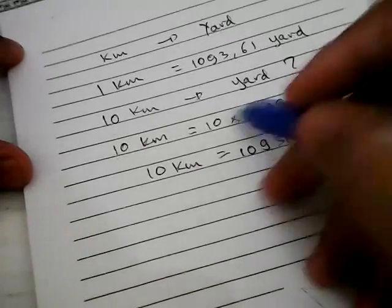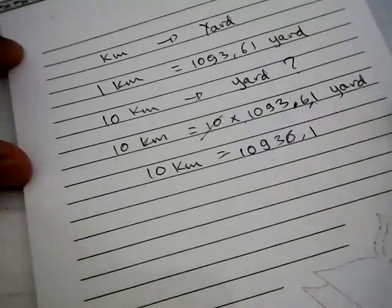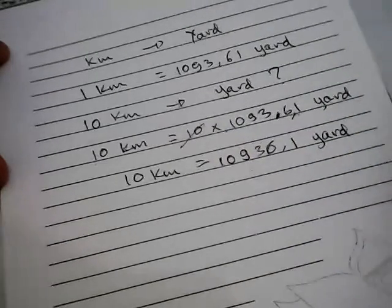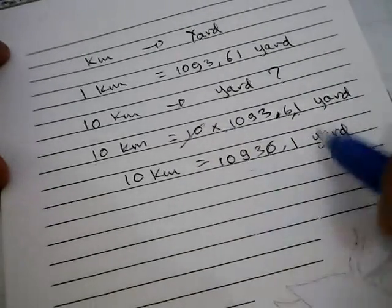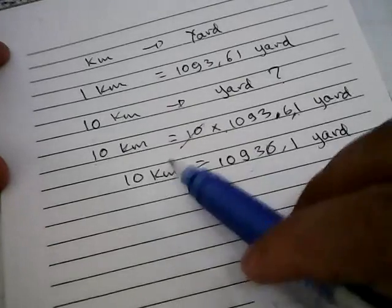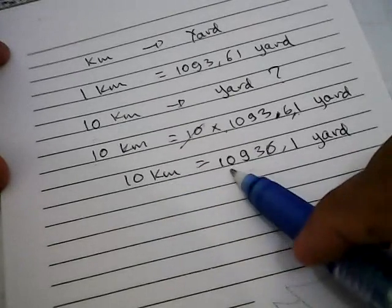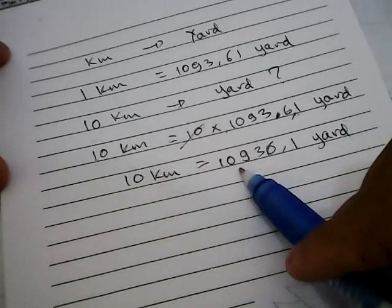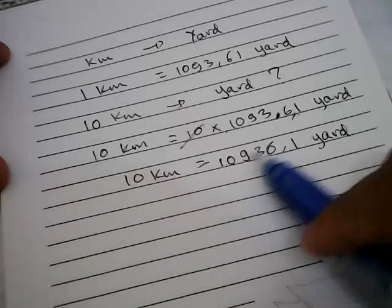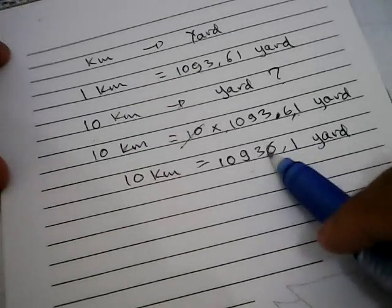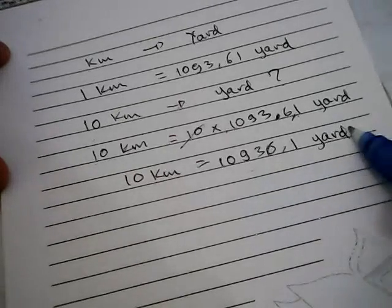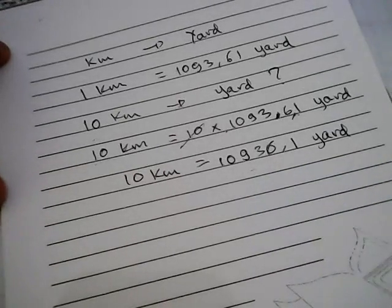That's it. That's the result of our conversion between 10 kilometers and yards. We will get 10 kilometers is equal to 10,936.1 yards.